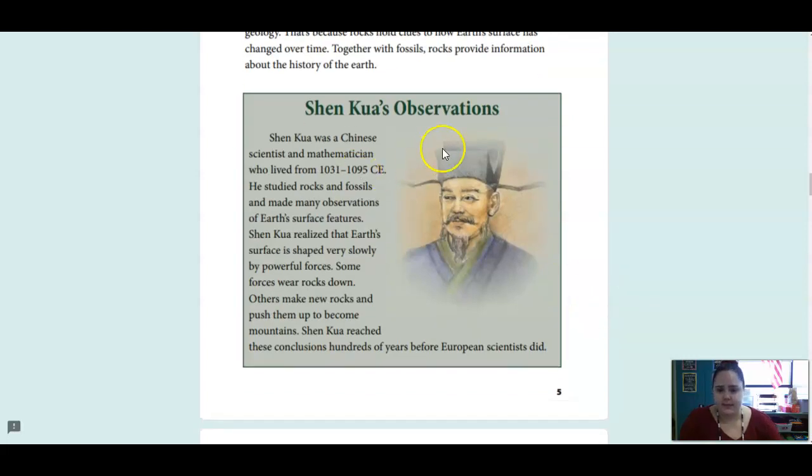And this is Shen Kua. He was a Chinese scientist and mathematician. He lived from 1031 to 1095 CE. He studied rocks and fossils and made many observations of earth's surface features. Shen Kua realized that earth's surface is shaped very slowly by powerful forces. Some forces wear rocks down. Others make new rocks and push them up to become mountains. Shen Kua reached these conclusions hundreds of years before European scientists did.